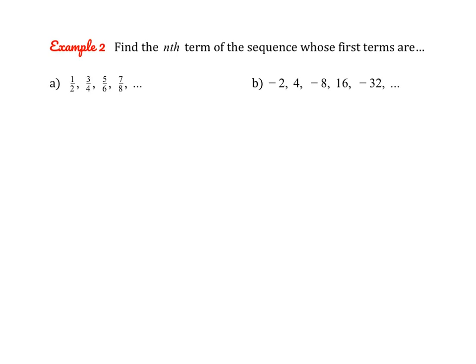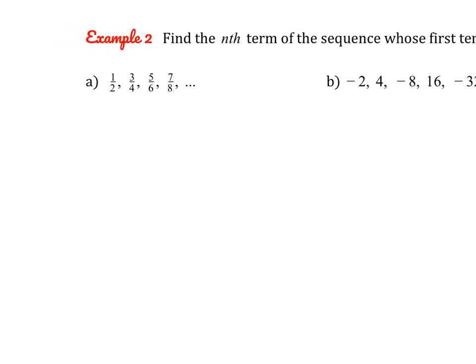Now we're going to find the nth term of a sequence whose first terms are listed. We need to create the formula for that sequence, which means looking for patterns. Let's look at the numerator first. The numbers are all odd numbers — a common pattern. The way to generate odd numbers is 2 times n minus 1, which is double the place in line minus 1.